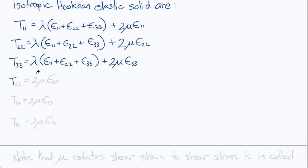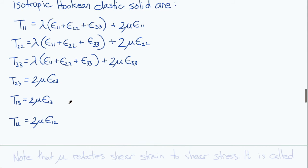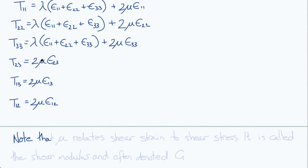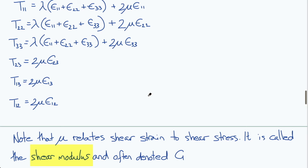And then the shear stress components. T23 is 2mu times ε23. T13 is 2mu times ε13. And T12 is 2mu times ε12. So you can see here that the modulus mu directly relates the shear stress to the shear strain. It's known as the shear modulus and often denoted by G, which is another technical constant.